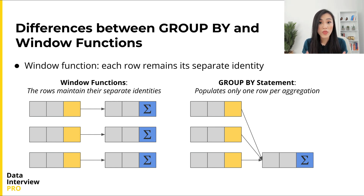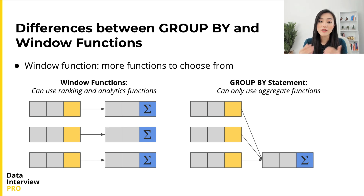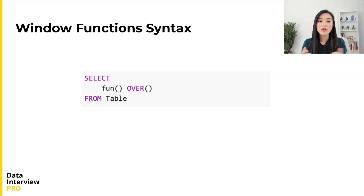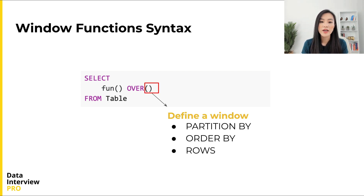Each row remains its separate identity. This is very convenient for calculating statistics within each group or comparing one row with other rows within the same group. Second, for the GROUP BY statement we can only use aggregate functions such as SUM and COUNT, while for window functions there are a lot more functions to choose from — including ranking functions and analytic functions, which we will talk about later. Now that you know what a window function is and the difference between GROUP BY and a window function, let's take a look at the syntax and how to define a window frame.